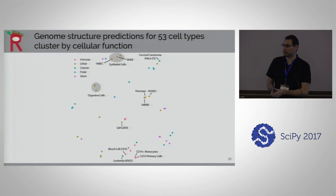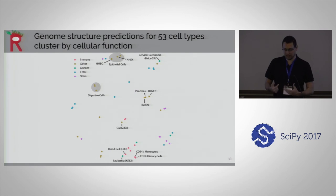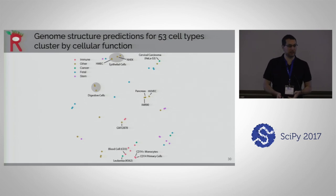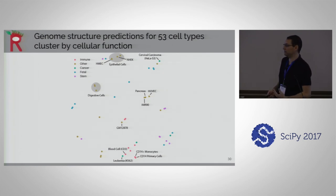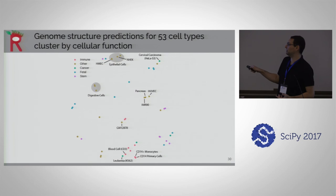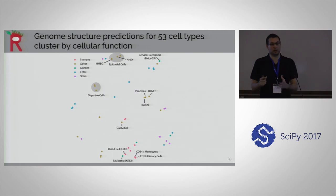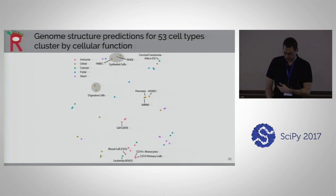We applied the model to 53 cell types from the Roadmap project and the structure seems to connect with cellular function. This is a map created by t-SNE, so don't look too deeply into exact connections since t-SNE results vary run to run. But there does seem like a general connection: immune cells cluster together, digestive cells are around here, epithelial cells are around here, and cancer cells don't cluster anywhere, which makes sense since they are modifications of cell types.